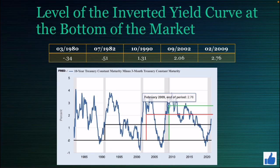This is the chart of the inverted yield curve. The yield curve inverts, and then we reach the bottom of the market in these three indicators — in green, black, and red. In green, you can see in February 2009 we reached 2.76 when the bottom of the market was reached. In red, we reached 2.06 in 2002. In black, we reached the bottom of the market at 1.31 in 1990. You can see it's gradually stepping up over time.